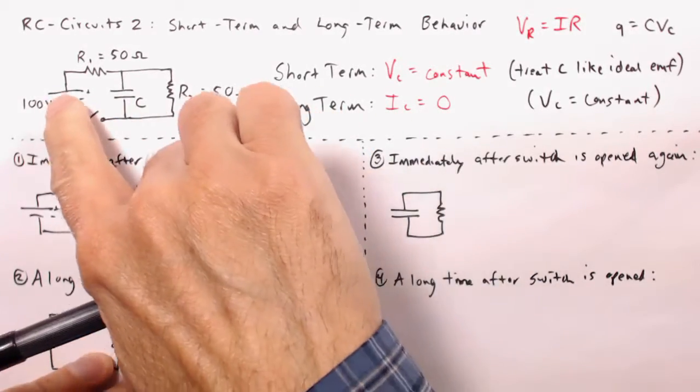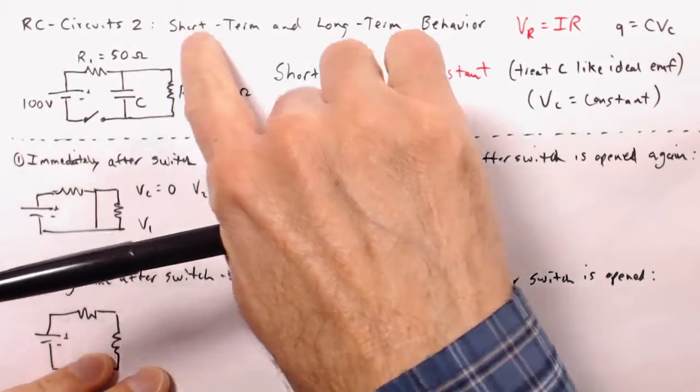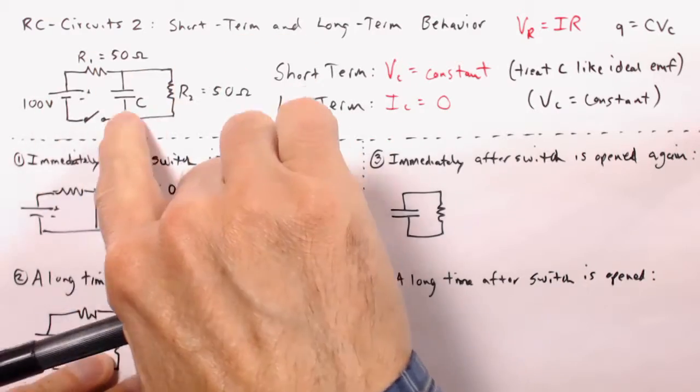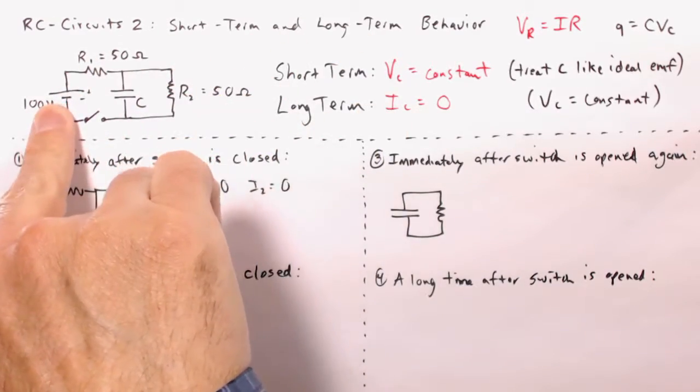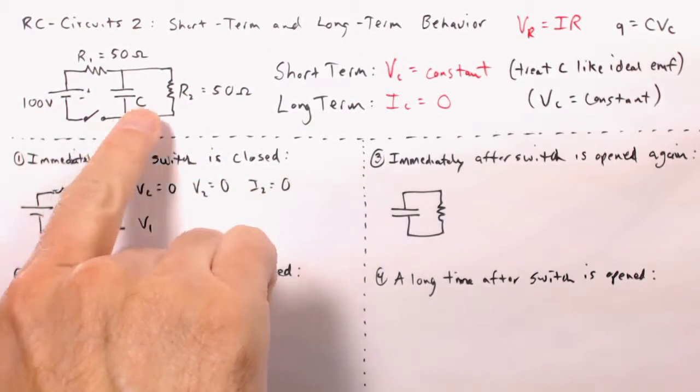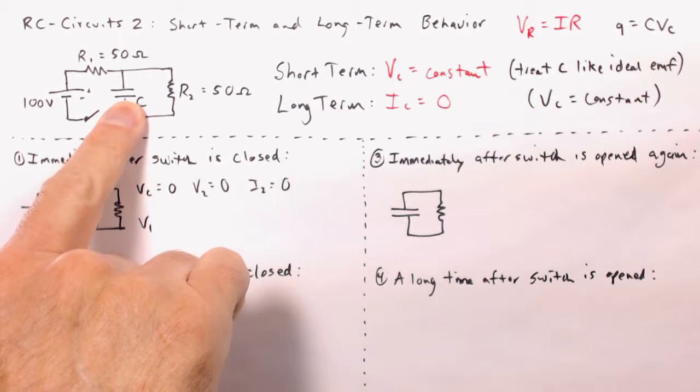What happens with V1? Well, if you look at the voltage drop going around the circle, whether you go around this way or whether you go around this way, we've got 100 volts here, we've got zero volts there, we've got zero volts there.